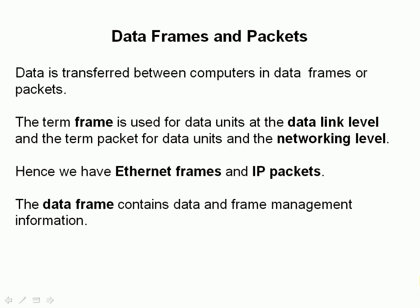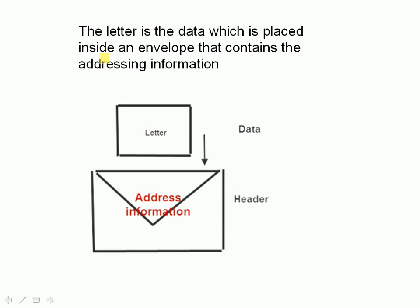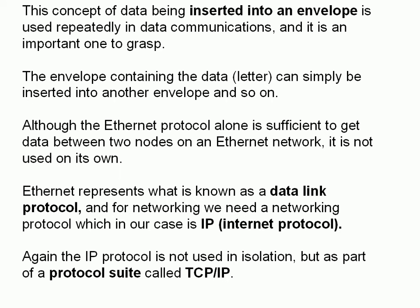Data is transferred between computers in data frames or packets. The term 'frame' is used for data units at the data link level, and the term 'packet' is used for data units at the networking level — hence we have Ethernet frames and IP packets. A data frame contains data and frame management information, consisting of a header and data. The concept used to describe data frames is that of a letter and an envelope: the letter is the data, placed inside the envelope, and the envelope contains addressing information. Just as a postman reads addressing information on the envelope to know where to deliver the message, devices on the network read addressing information in data frames or IP packets to know where to deliver the packets.